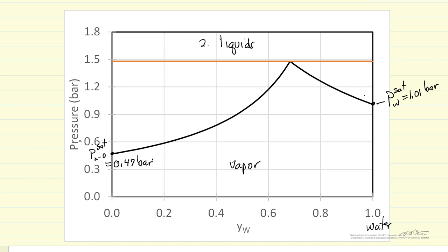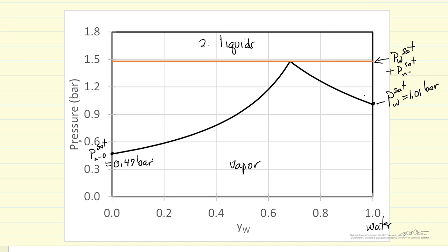Where we have the two liquids and a vapor in equilibrium, that corresponds to a specific pressure. This pressure is just the sum: the saturation pressure of water plus the saturation pressure of n-octane, which gives 1.48 bar. Only at this pressure do we have two liquids in equilibrium with the vapor.